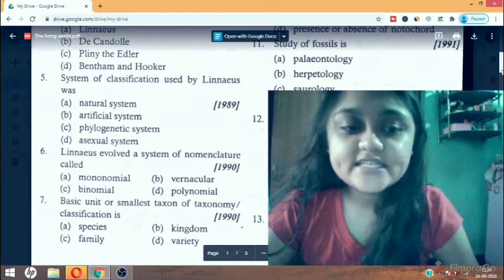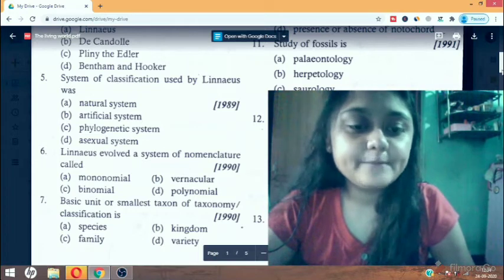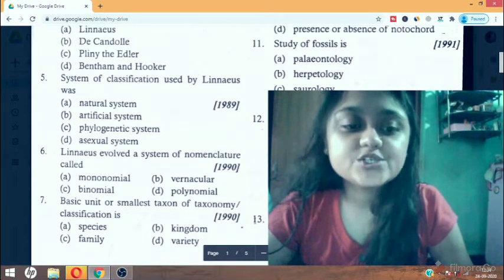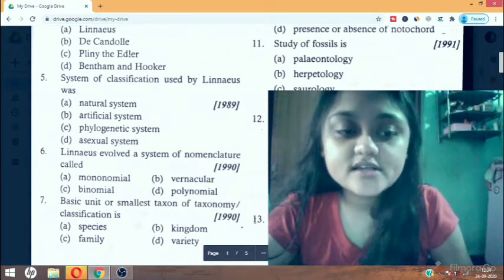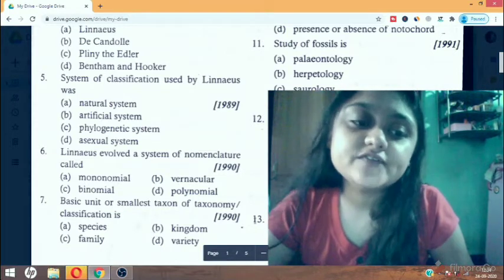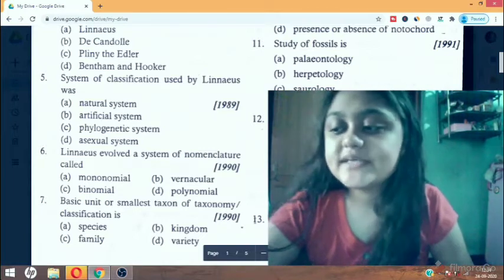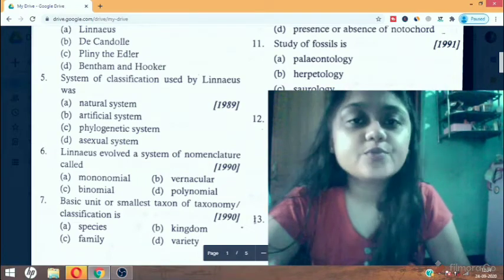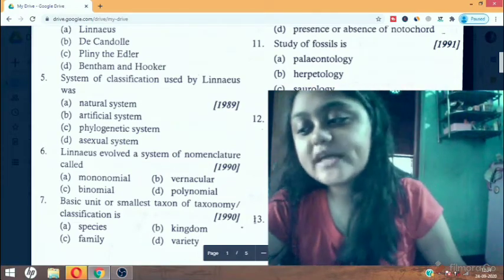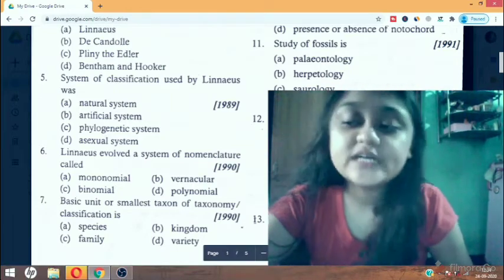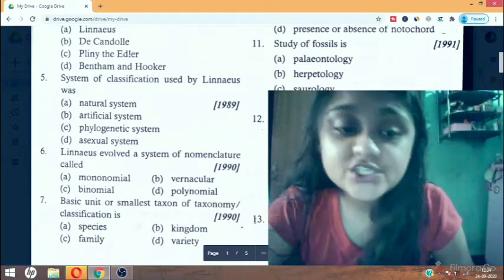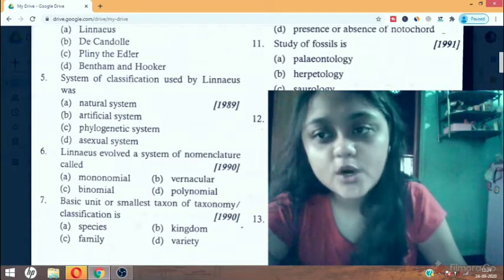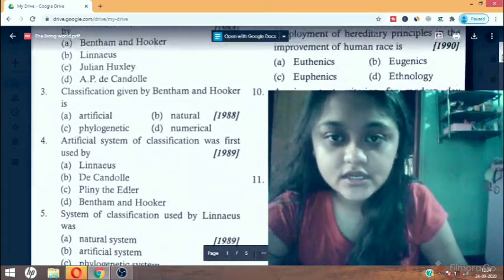Seventh question: basic unit or smallest taxon of taxonomic classification is - species, kingdom, family, variety. The answer is species. Species is the basic unit for understanding taxonomy that occupies a key position. It is defined as a dynamic genetically distinct group of organisms which resemble each other in all respect and freely interbreed among themselves to produce fertile offspring.